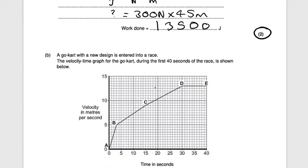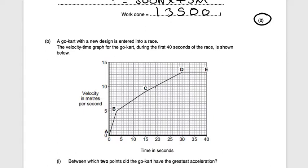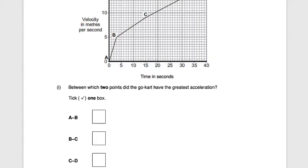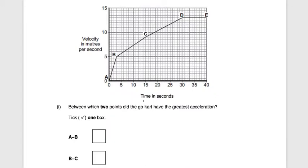Next question: a go-car with a new design is entered into a race. The velocity-time graph for the go-car during the first 40 seconds of the race is shown. Between which two points did the go-car have the greatest acceleration? The options are A to B, B to C, or C to D. The greatest acceleration is between A and B.